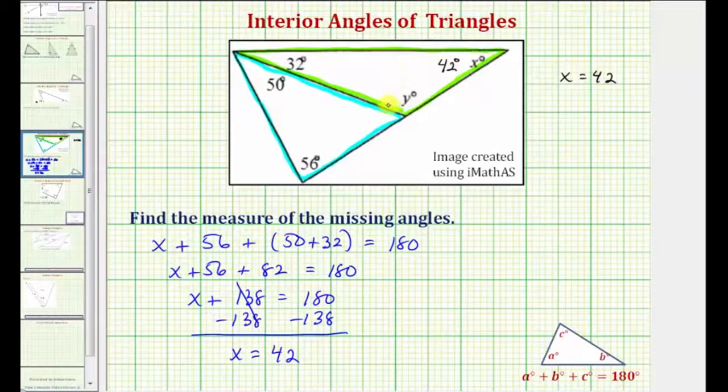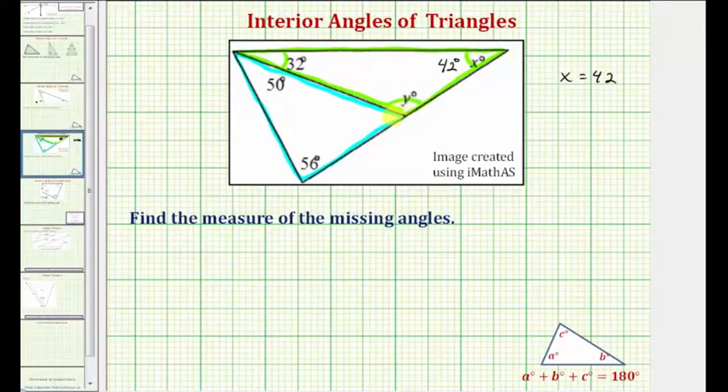we know the sum of this angle, this angle, and this angle must measure 180 degrees. And therefore y plus 32 plus 42 must equal 180.